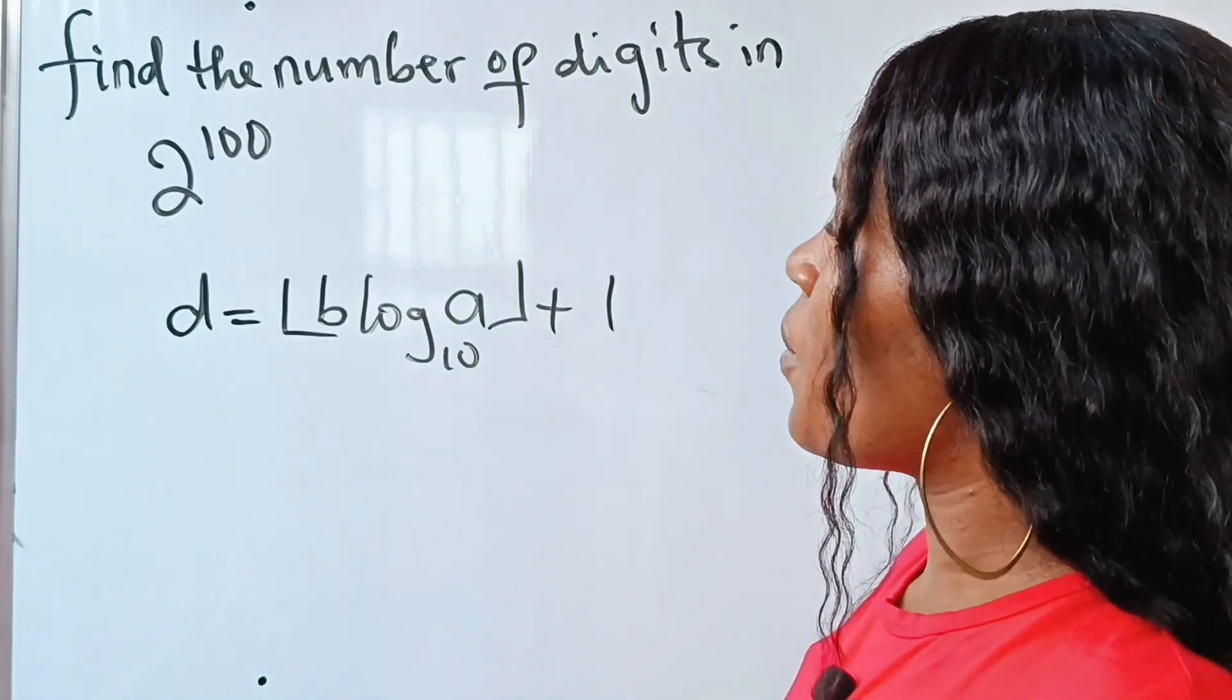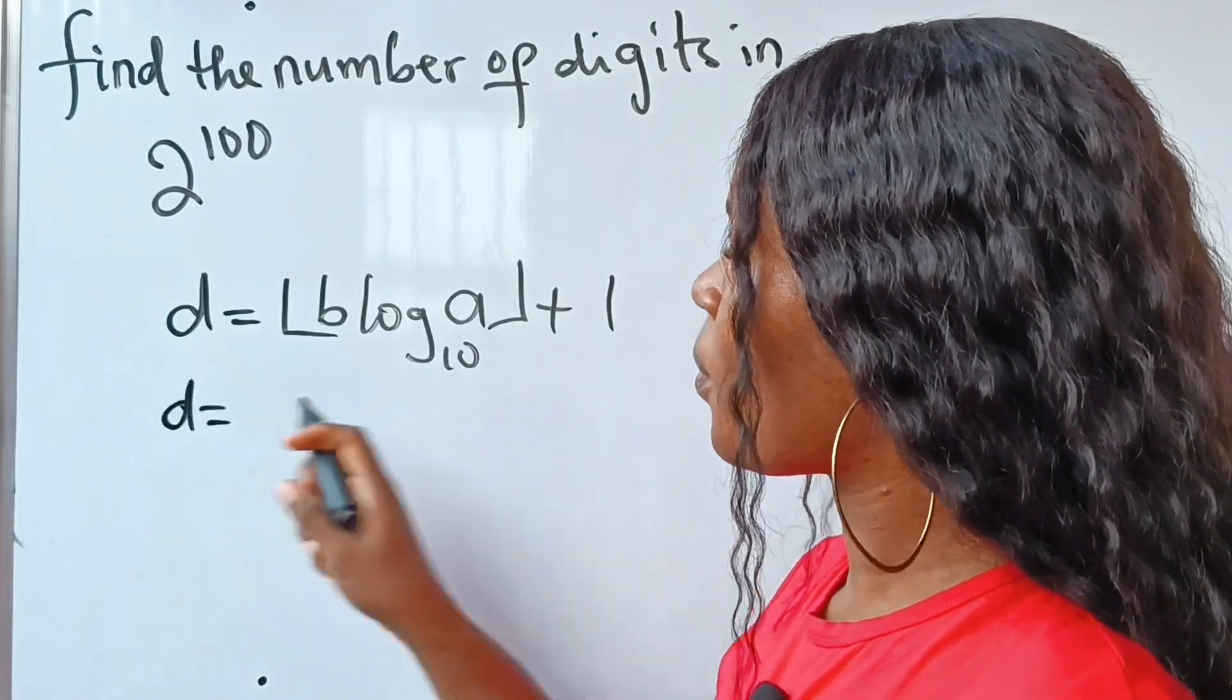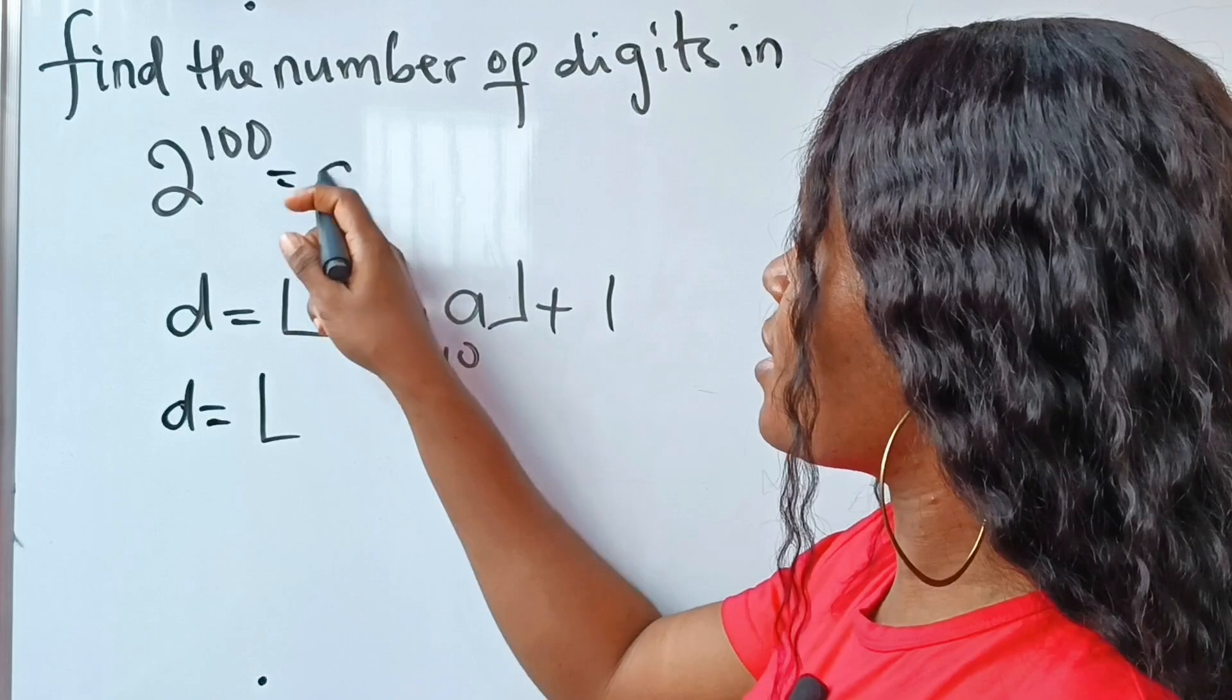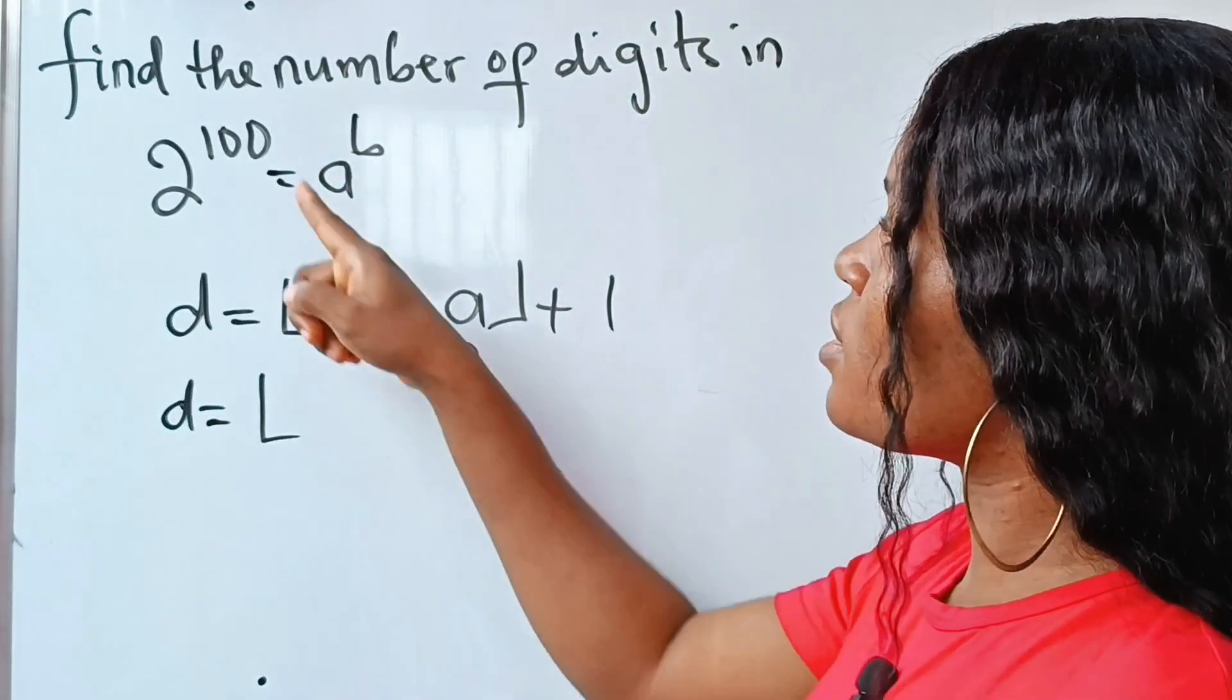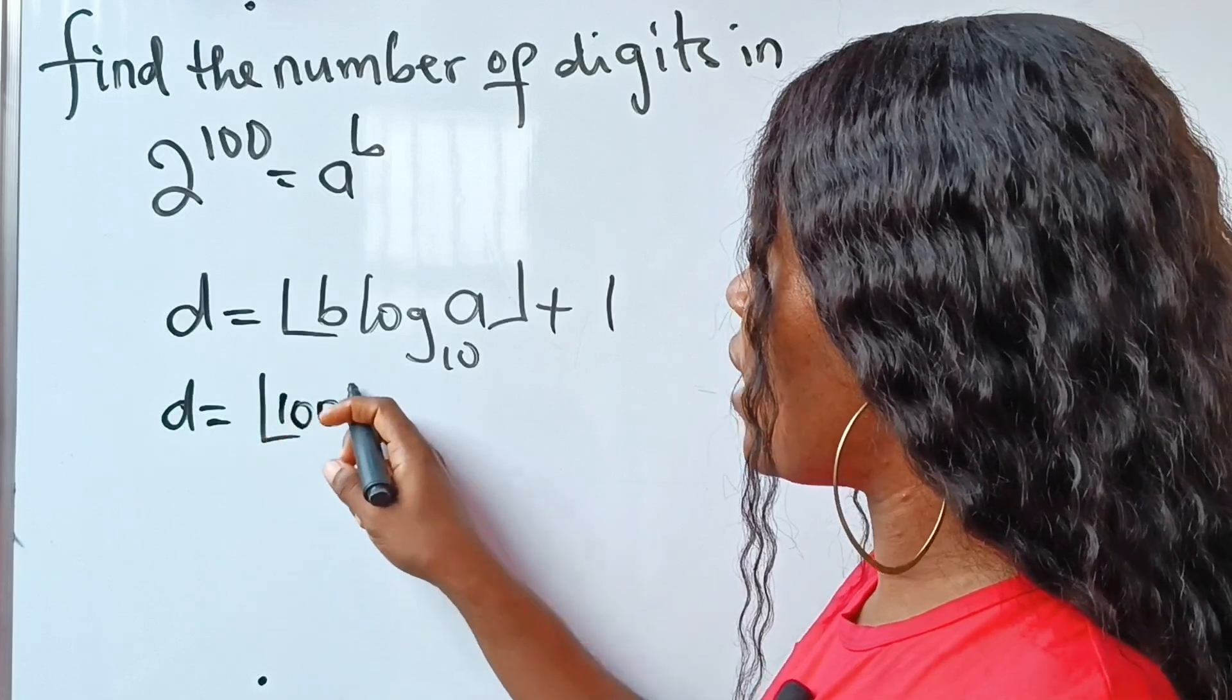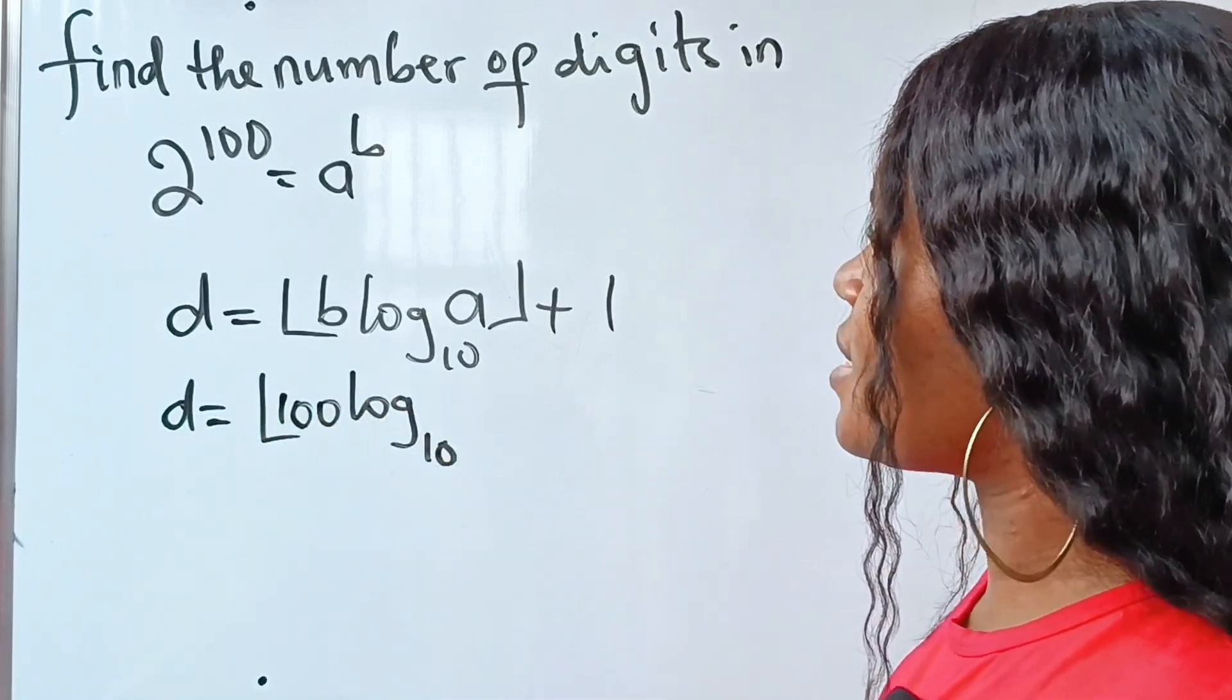Recall that d is what we are looking for, so the floor of what? Recall this is the same thing as a to the power of b, right? So that means that our b is 100, so it's going to be 100 multiplied by log to base 10 of a, which is 2, plus 1.